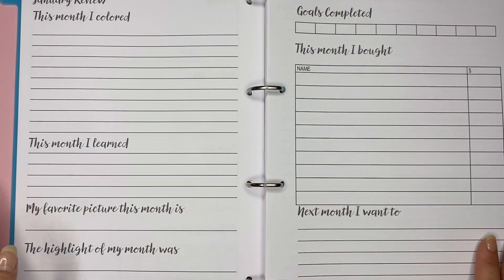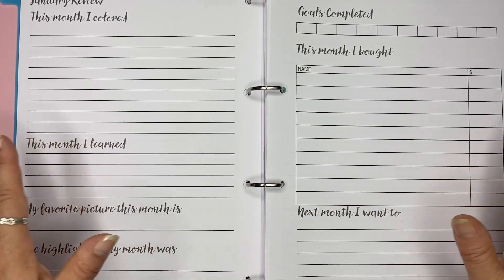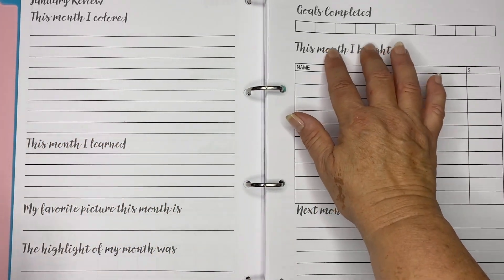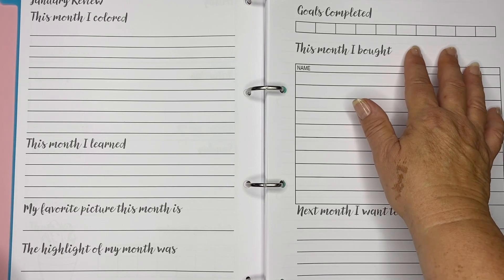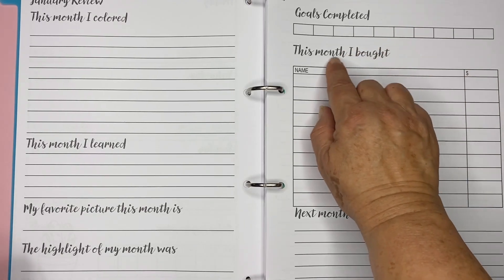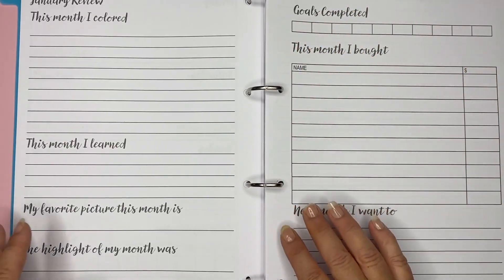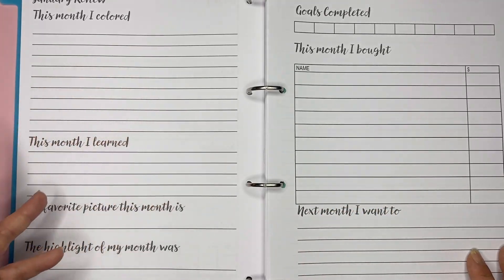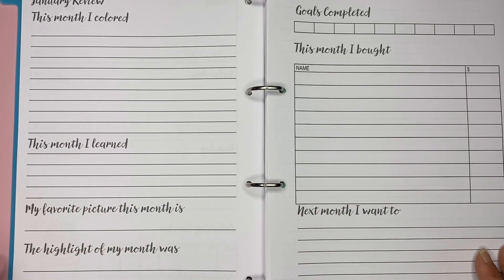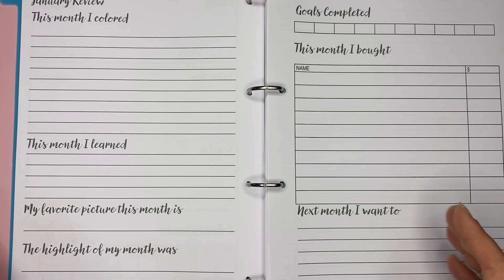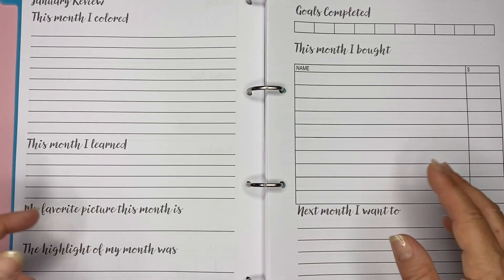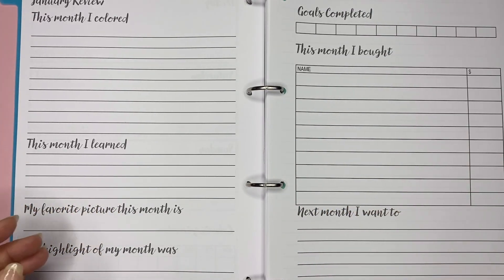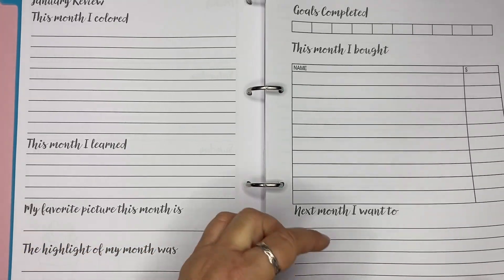At the end of every month, I've got a review. So I can see how many of those goals at the beginning of the year I actually have achieved and I can mark them off. And I can keep note of what I coloured, what I learnt, my favourite picture, the highlight of my month, anything to do with colouring, I can put it in here. And also what I want to work on.